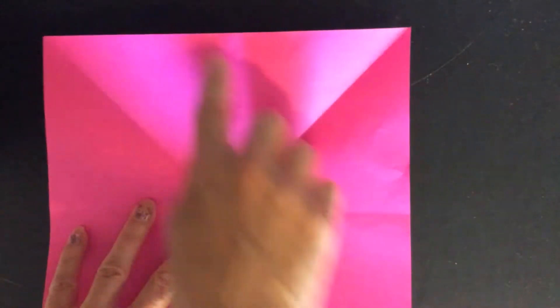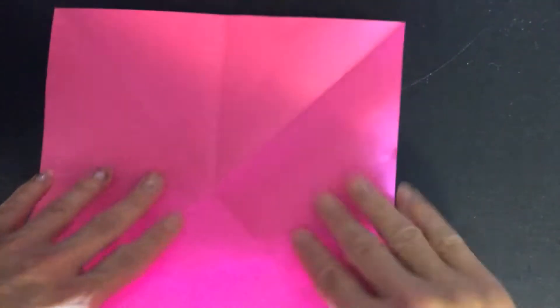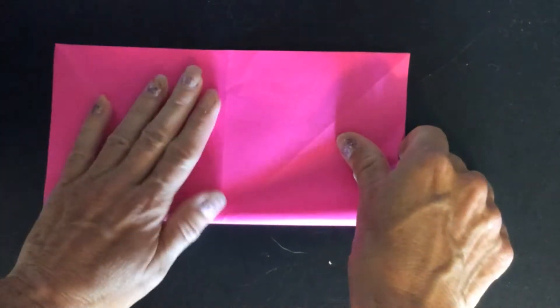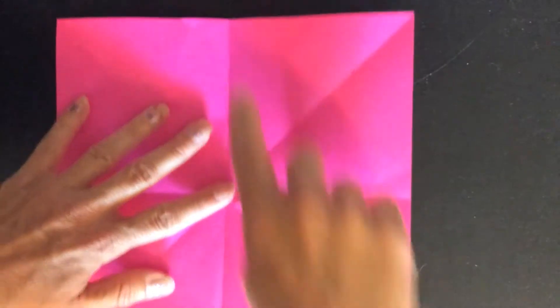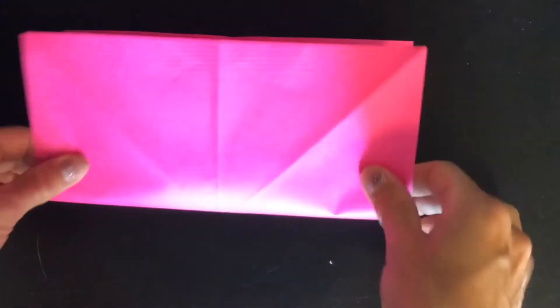And then you're going to fold flat edge to flat edge, make a crease, and then fold the other flat edge toward the other side.